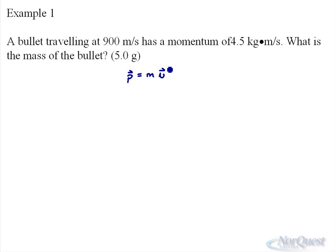So in this case we have the speed of the object, 900 meters per second. We have its momentum—doesn't tell us what direction—4.5 kilogram meters per second.